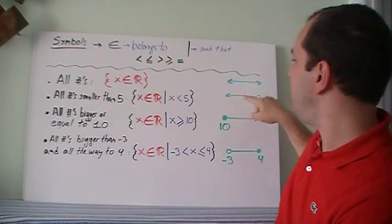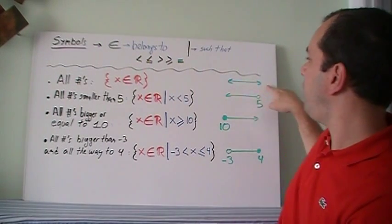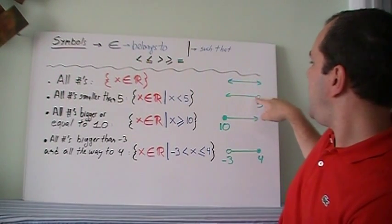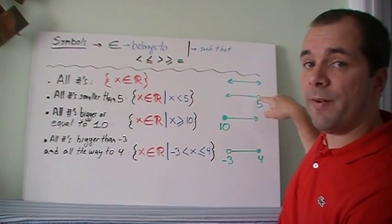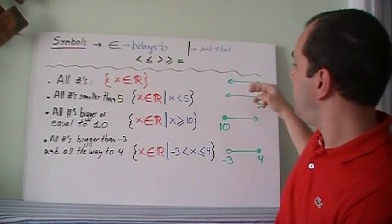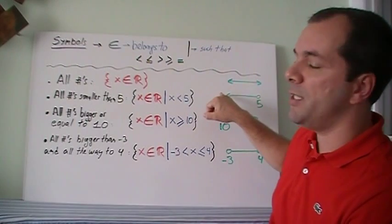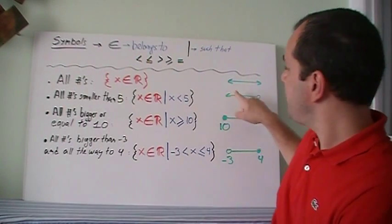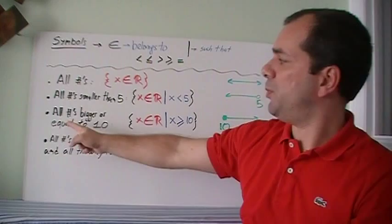Which is basically repeating this in symbols. How do we represent this? Well, all numbers will go all the way left to right. Less than 5, I put a circle, an open circle on 5, and it goes all the way to the left. So I'm using all those numbers.